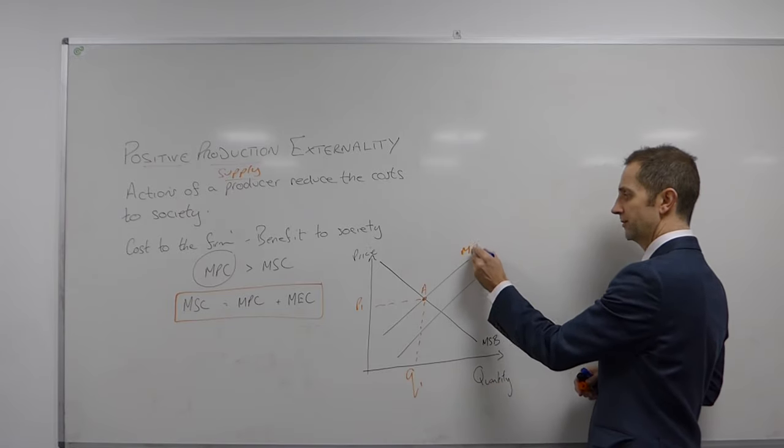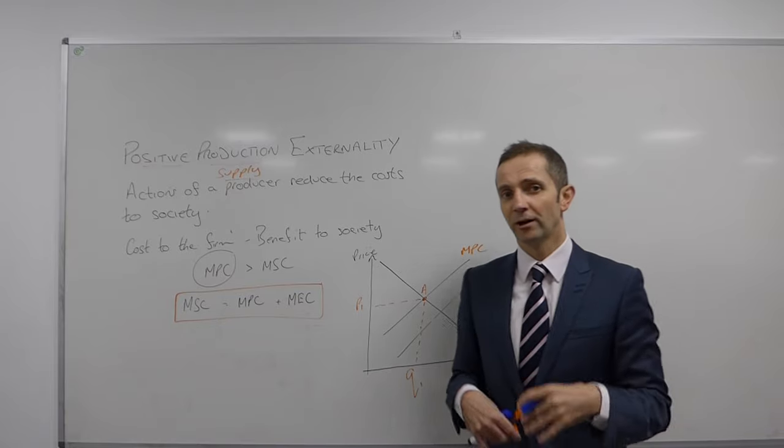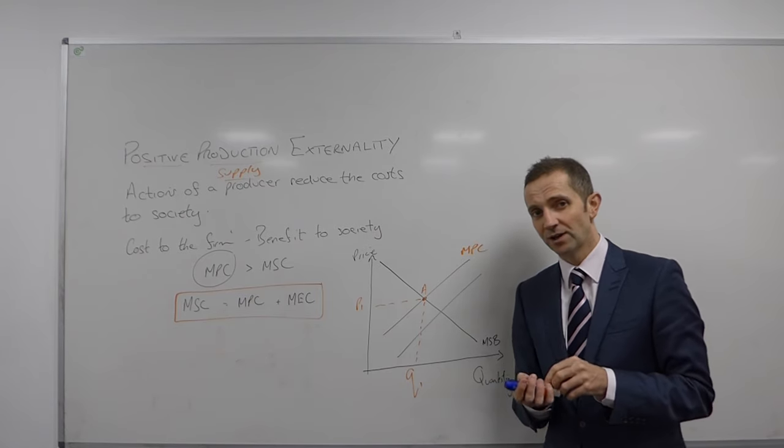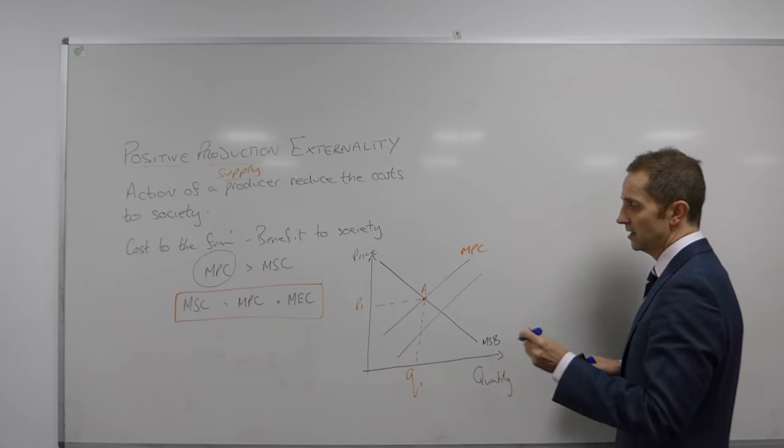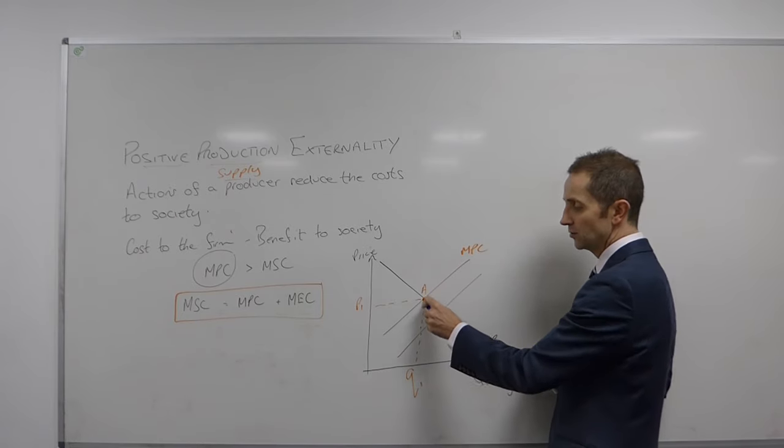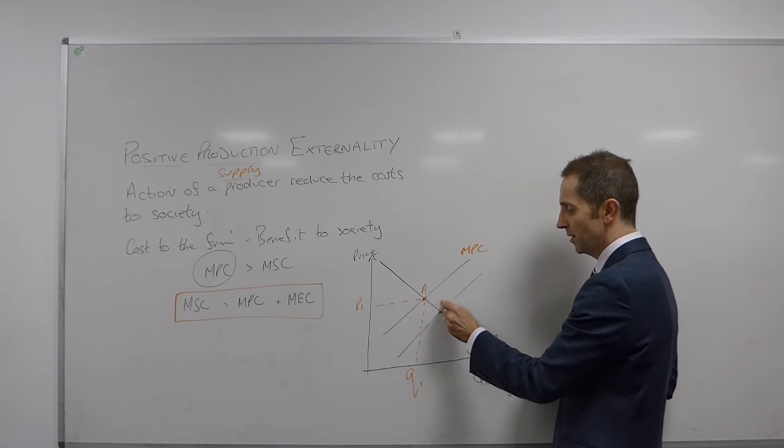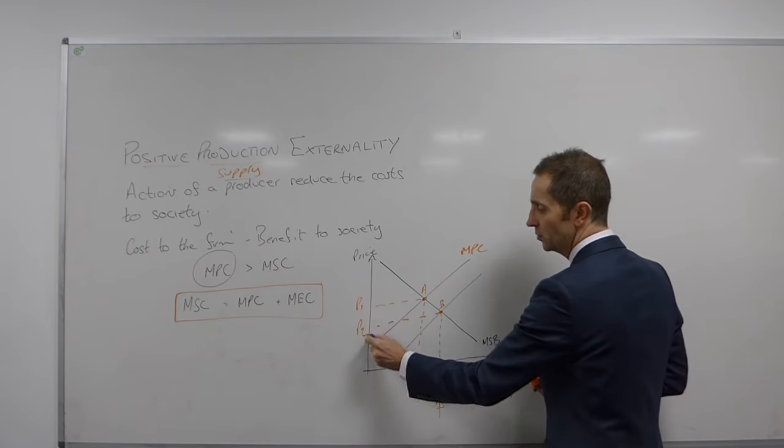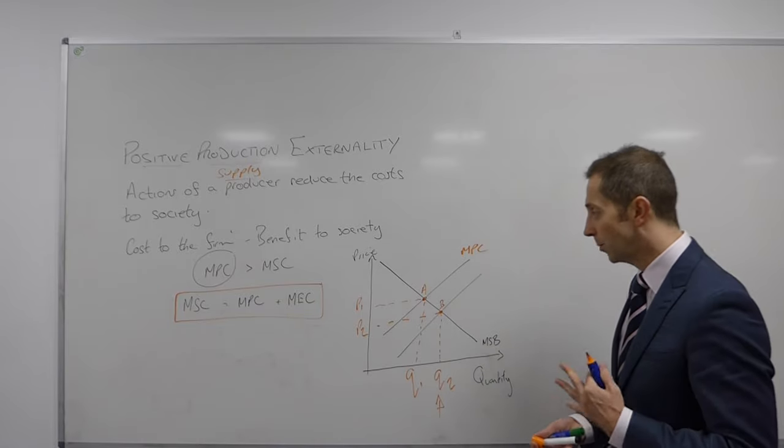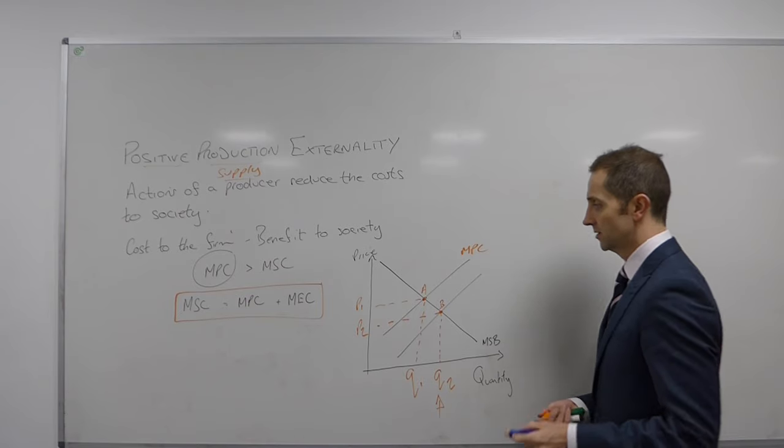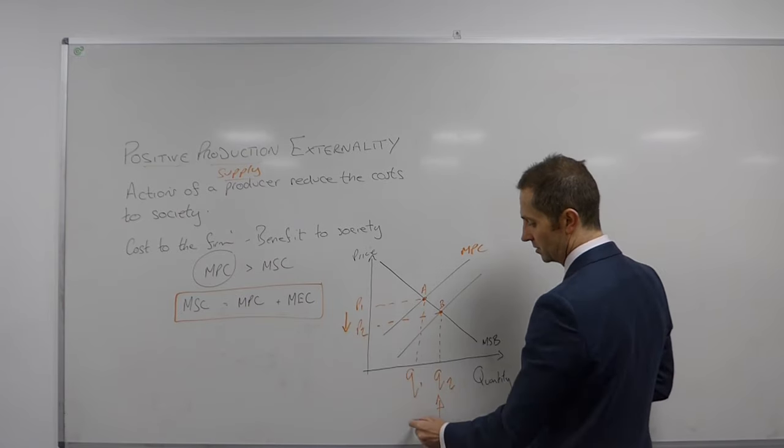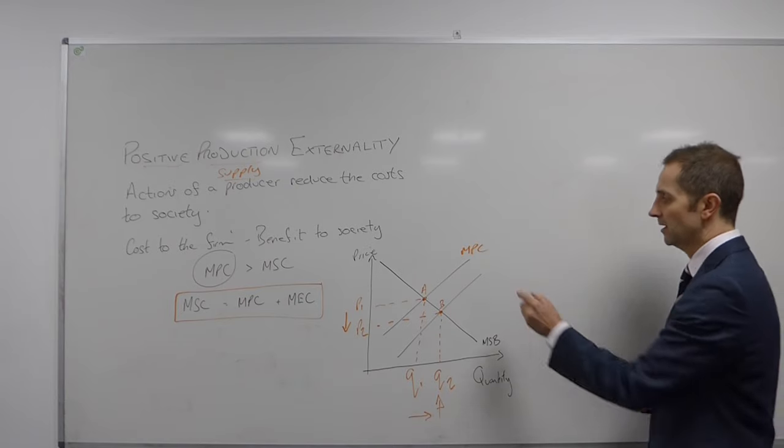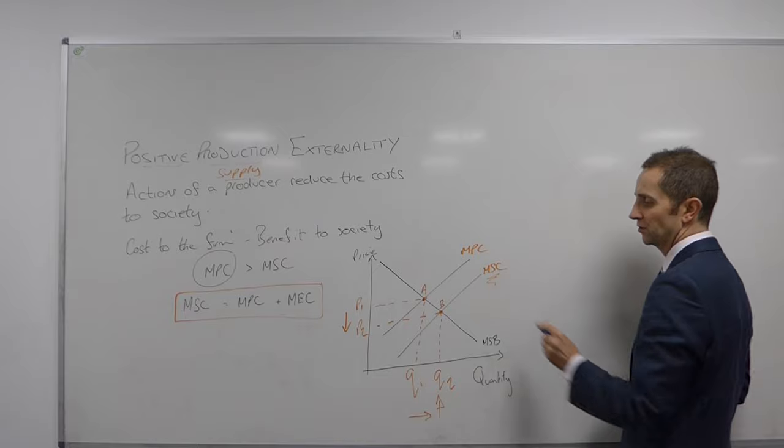And so this is the marginal private cost. However, as a consequence of the firm's actions, they actually lower the cost to society. There is a benefit to society. And so we can therefore also say that we would wish the firm, we'd rather than do this production at A, we'd rather that production was at B for the benefit of society to get to this point here, Q2 at P2, which you know as the socially optimum equilibrium level of output. So we want price to go in this direction and we want the quantity or the production to go in this direction, to increase. And we also therefore can finish this off by saying that this must be the marginal social cost.